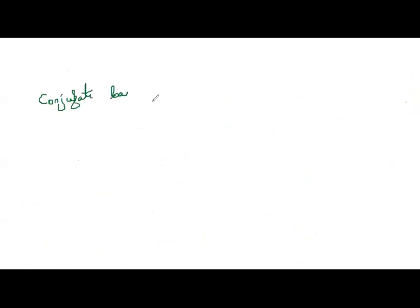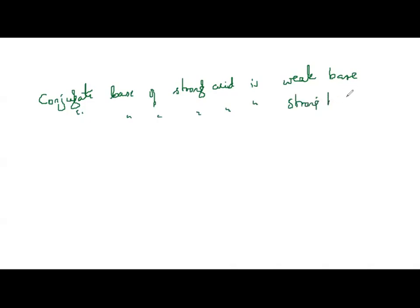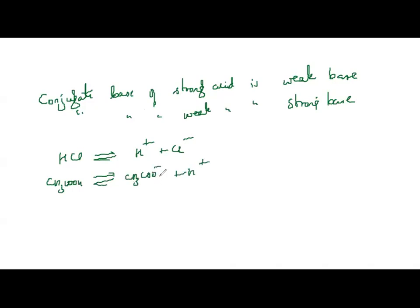Remember: conjugate base of a strong acid is a weak base, and vice versa — conjugate base of a weak acid is a strong base. For example, HCl is a strong acid; its conjugate base Cl⁻ is a weak base. CH₃COOH is a weak acid; its conjugate base CH₃COO⁻ is a strong base.